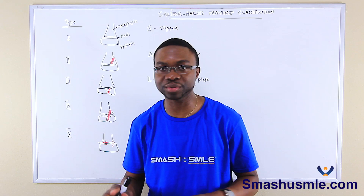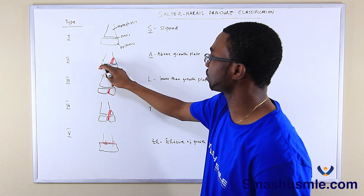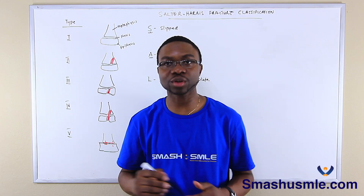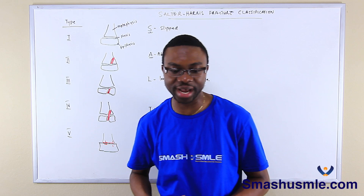Type two is Above the growth plate. We're going to spell SALTER out — S is slipped, A is above the growth plate. So we get a fracture through a portion of the physis and up into the metaphysis. It has excellent prognosis and can be managed non-operatively.